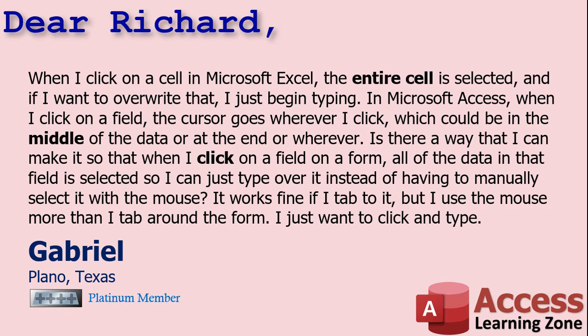Gabriel says: when I click on a cell in Microsoft Excel the entire cell is selected and if I want to overwrite it I just begin typing. In Microsoft Access when I click on a field the cursor goes wherever I click — in the middle of the data, at the end, or wherever. Is there a way that when I click on a field on a form all of the data is selected so I can just type over it? It works fine if I tab to it but I use the mouse more — I just want to click and type.